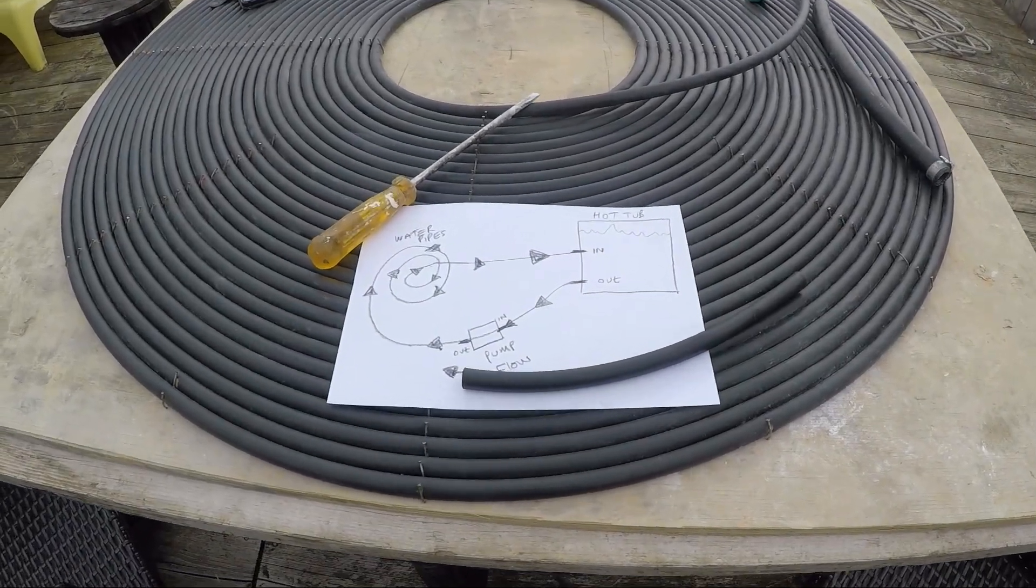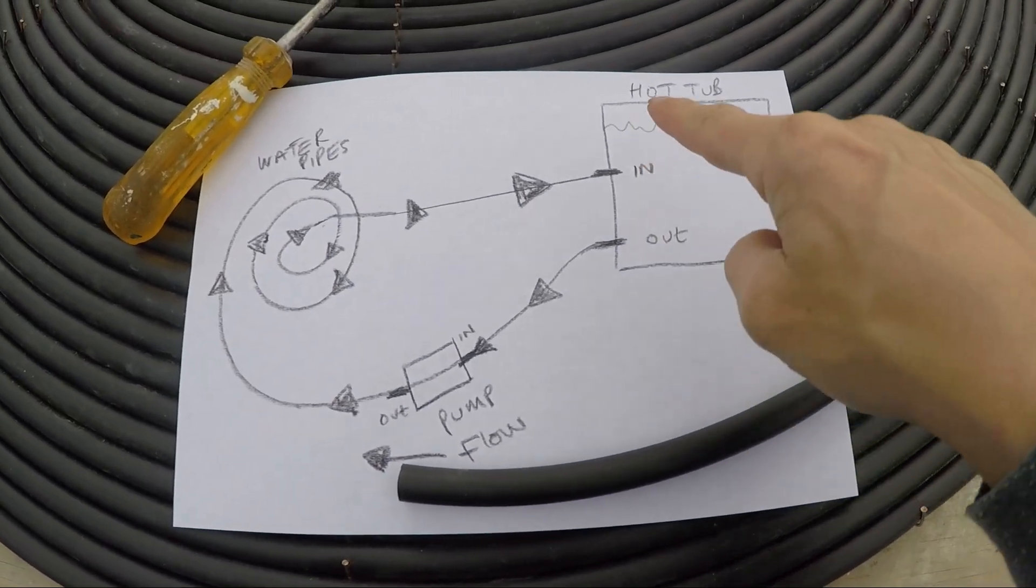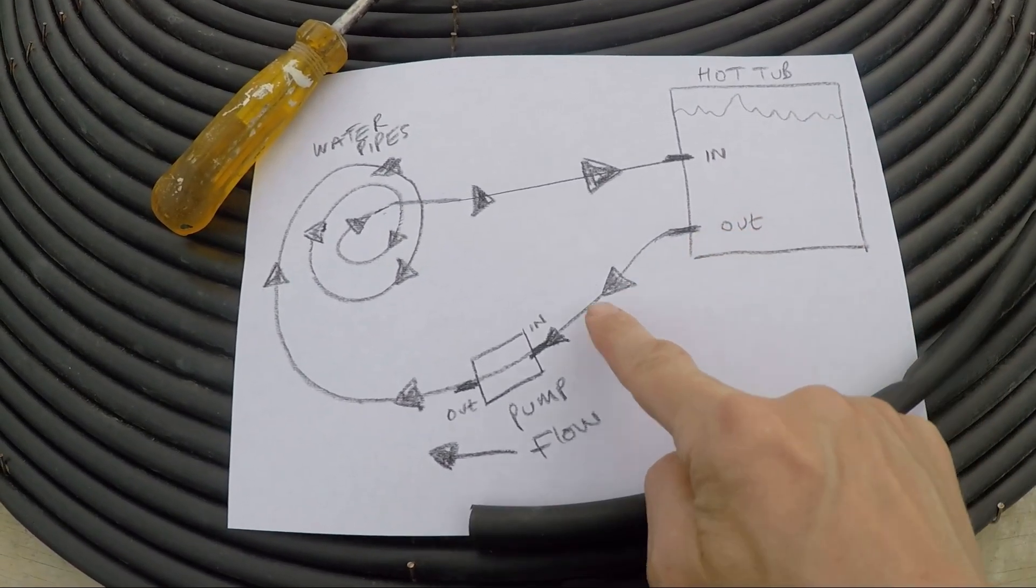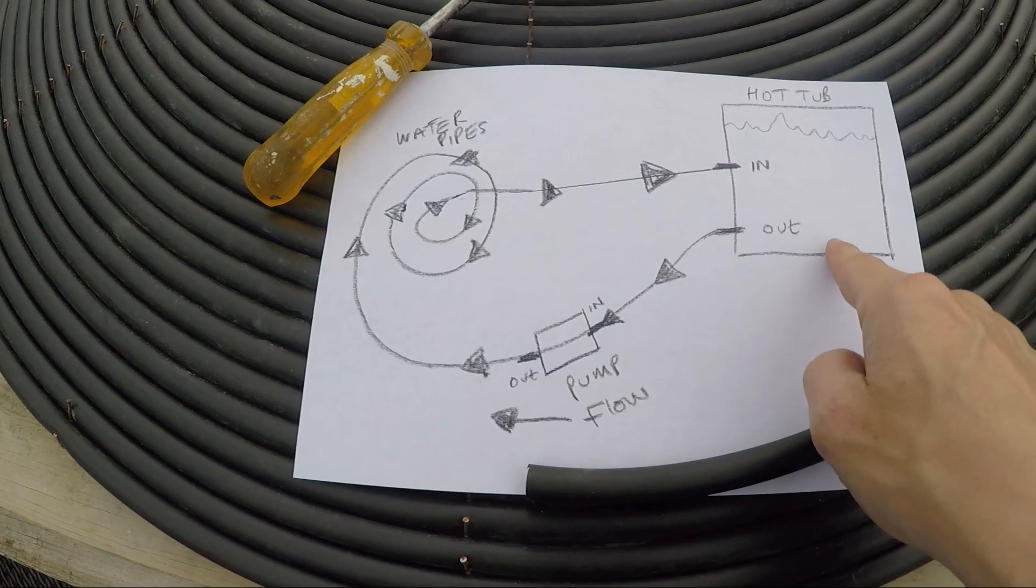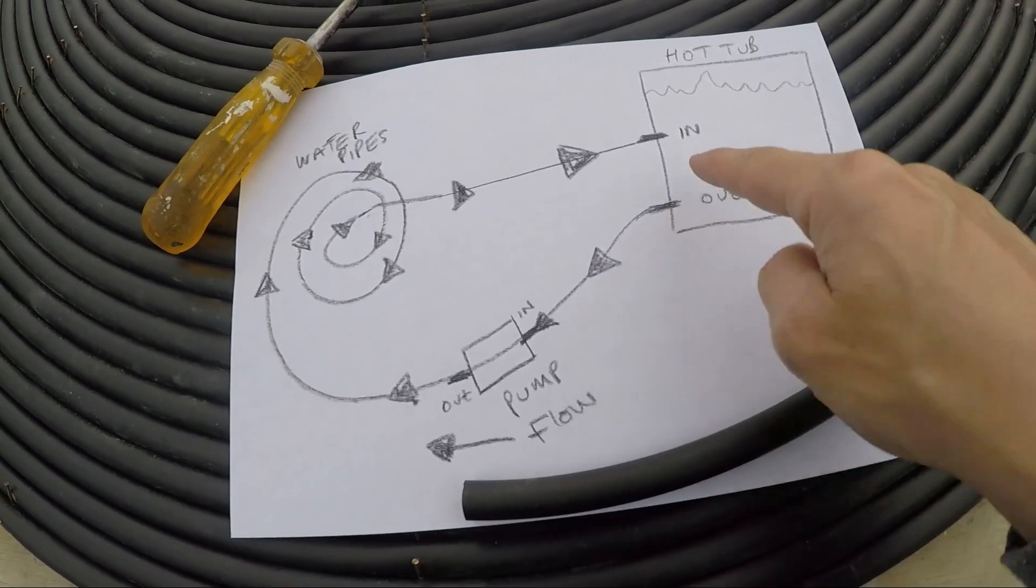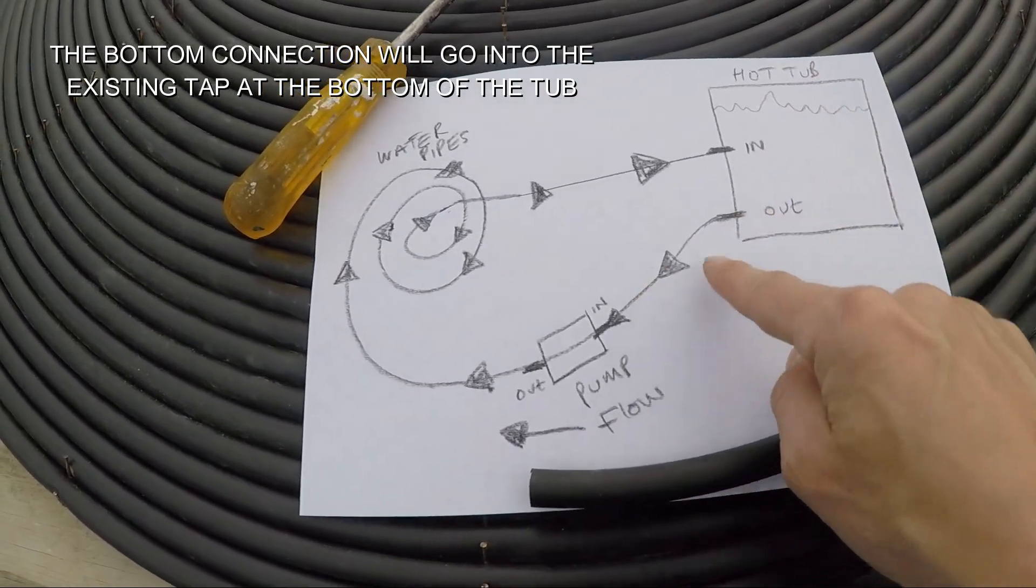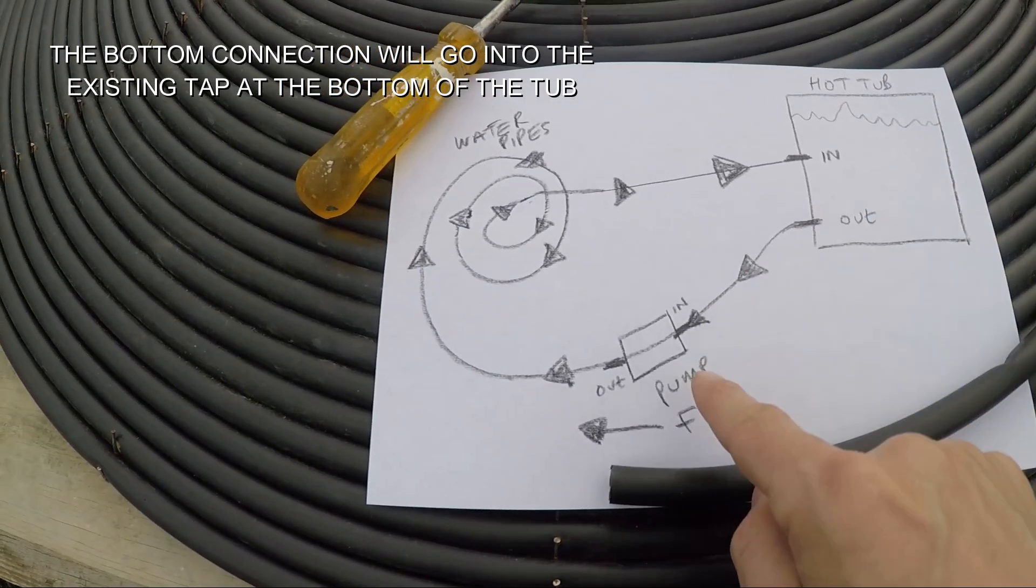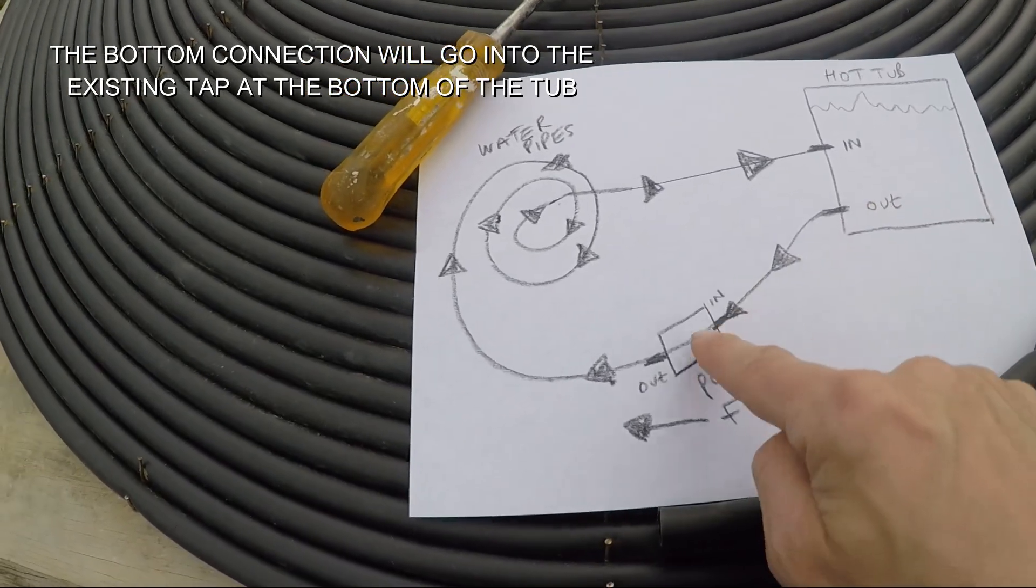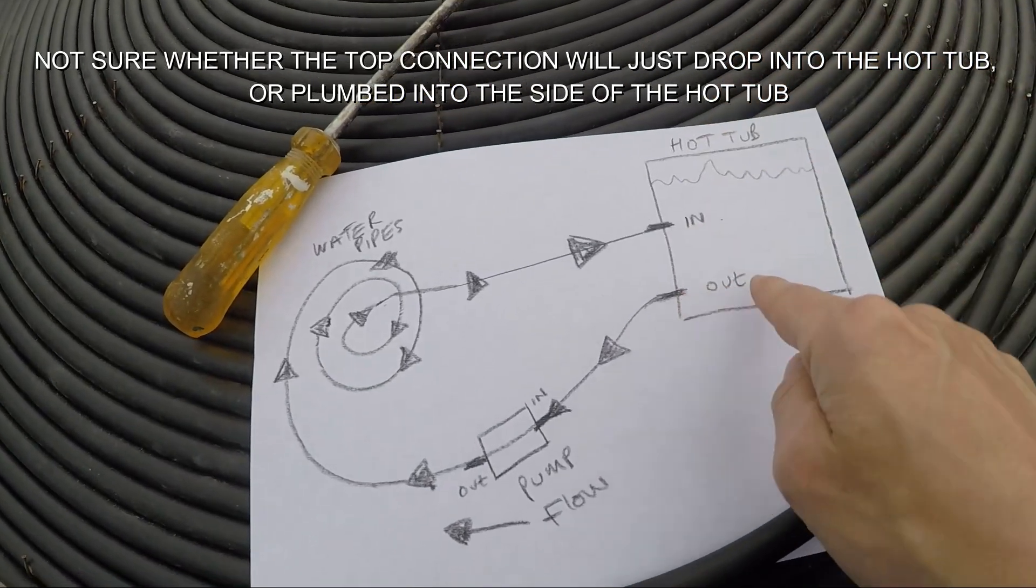Right, so this is my plan. Little sketch - got the hot tub here, the out and the in. I'm gonna plumb it into the bottom of the hot tub. The flow is gonna come this way. The weight of the water is gonna want to push down anyway and push that water out. When I think about it now, I don't even know if I need a pump because the weight of that water is always pushing down really fast anyway.